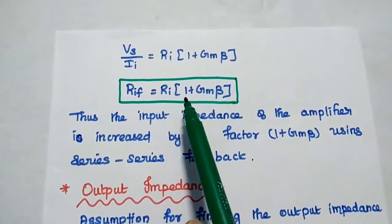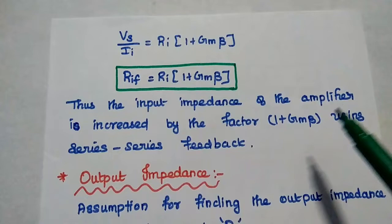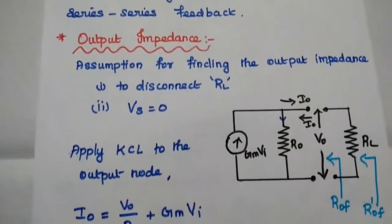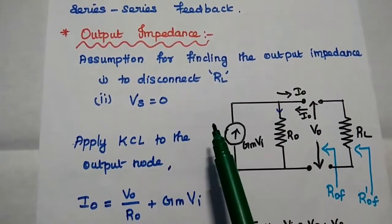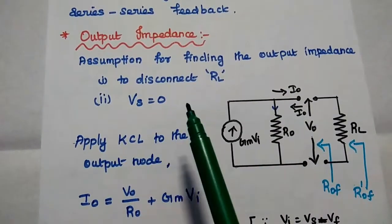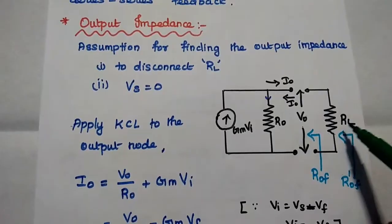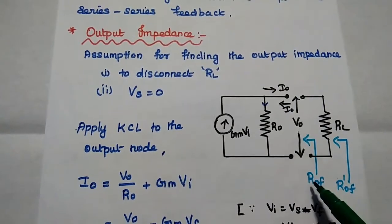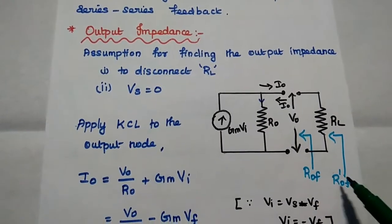Ri is the input impedance without feedback. Thus, the input impedance of the amplifier is increased by the factor 1 plus Gm beta using series-series feedback. Next is the output impedance. For finding out the output impedance, we make two assumptions: one is to disconnect the load resistance, and the other is that the source signal is equal to zero. We consider the output equivalent circuit, disconnect the load resistance, and find the actual output impedance ROF.